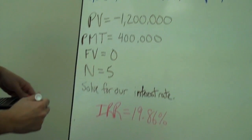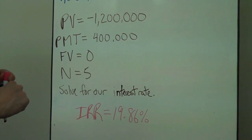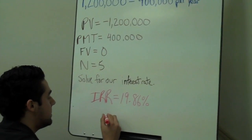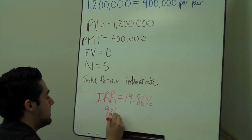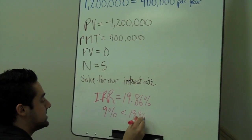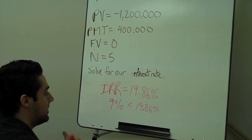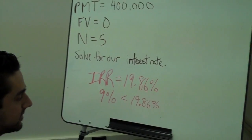Now we are going to choose to accept this project if looking at this rule. So our investors' required rate of return was 9% and we are getting 19.86% on this project. I think they will be pretty happy with that so we will accept the project.